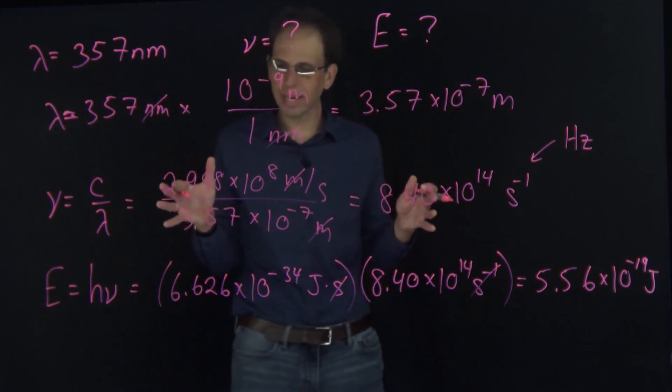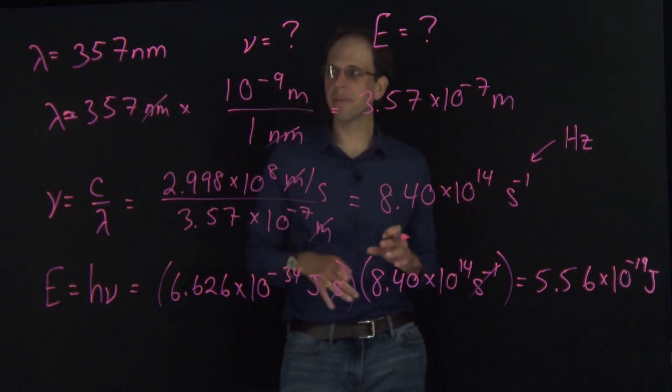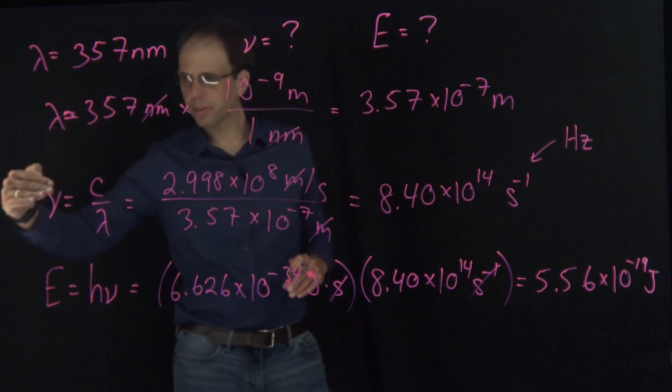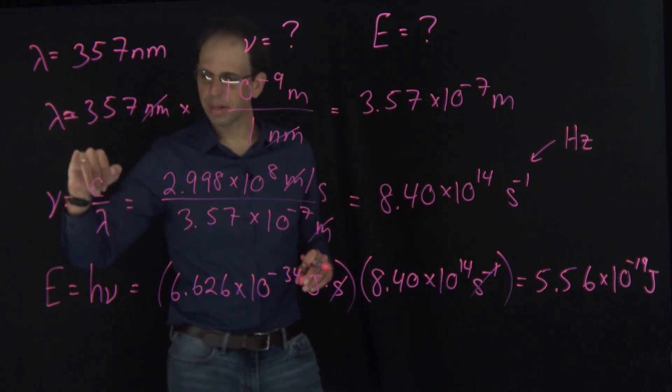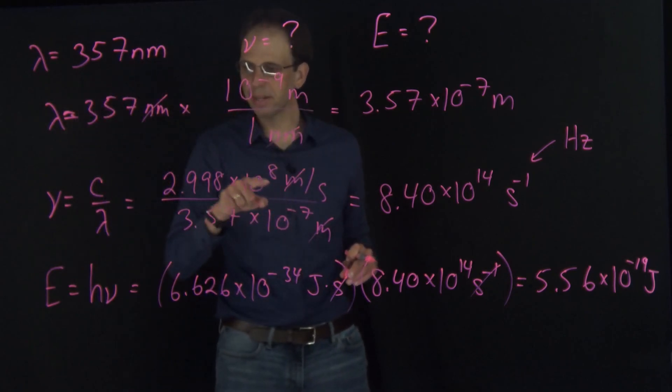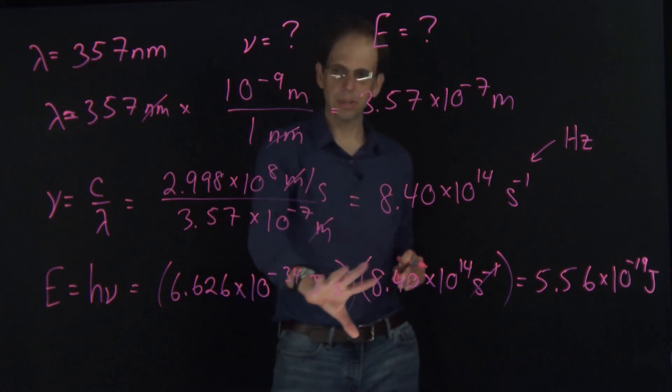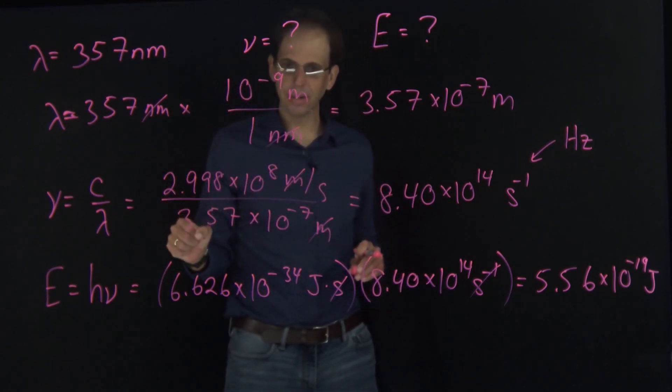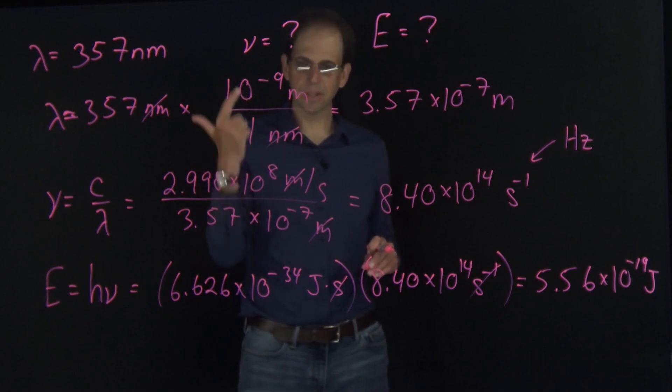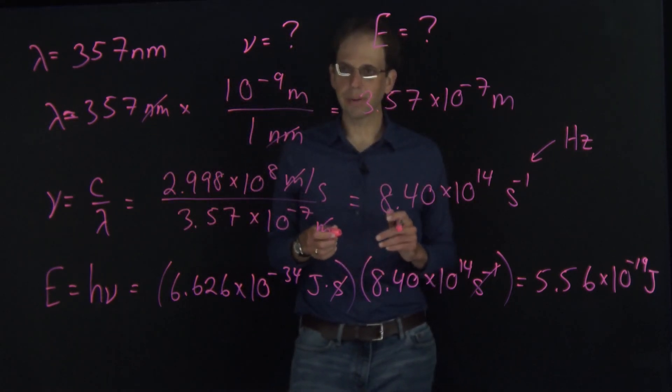In any case, the key point is when you're working with these conversions, you can use frequency equals c over lambda and energy equals h nu to interconvert between wavelength, frequency, and energy readily. The only caveat is to make sure your units cancel. I recommend converting everything to SI units, things like meters, inverse seconds, and joules so that you can use these expressions readily.